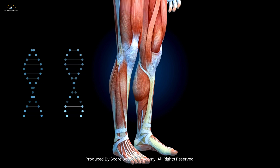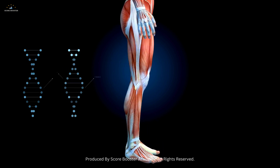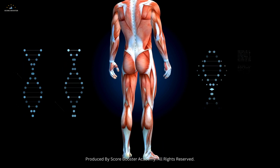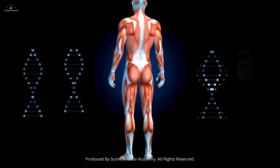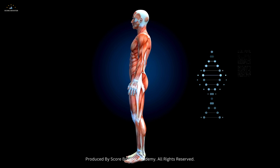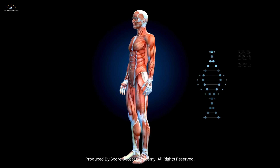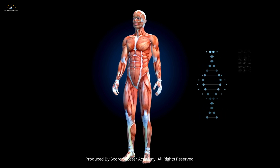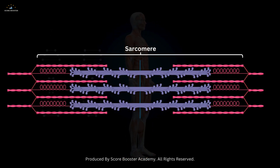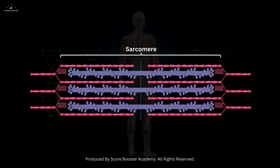The process of muscle contraction is beautifully orchestrated through the sliding filament theory. This theory explains that muscle contraction occurs when actin and myosin filaments slide past each other, shortening the sarcomere.